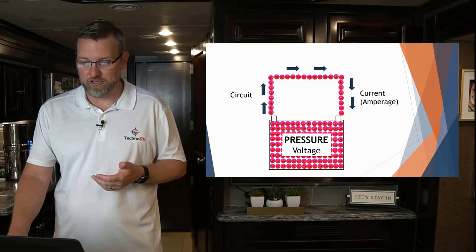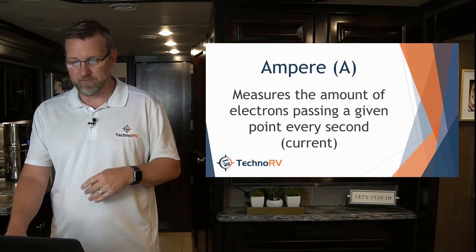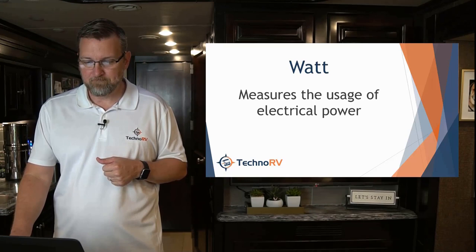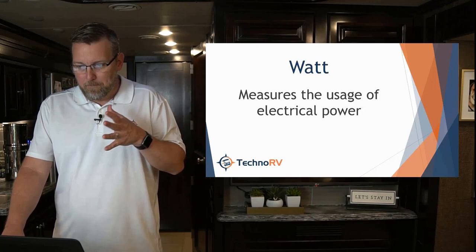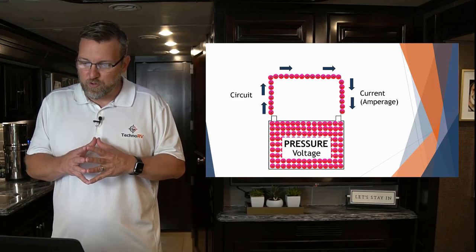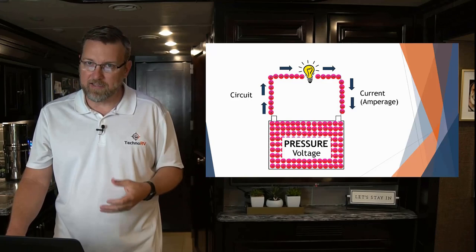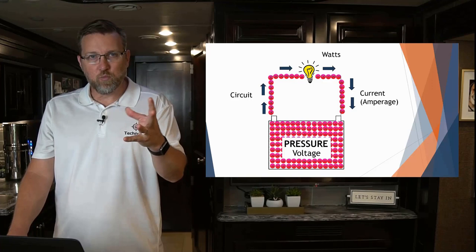Volts measures the pressure or the force under which electrons move, and amps measures the amount of electrons passing a given point every second — that's the current. But what's a watt? A watt measures the usage of electrical power. Let's take that battery again — we've charged it to its max, we've got the flow of current, and we light up a light bulb. The current's going through our RV's electrical outlets, we plug a lamp in, the light bulb comes on. What that light bulb absorbs in electricity is measured in watts.